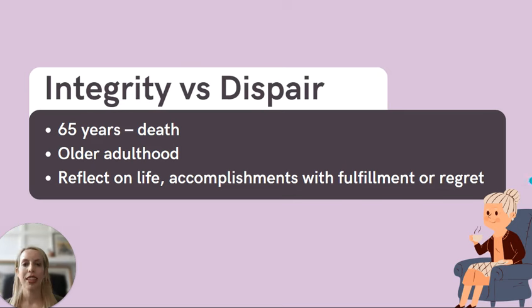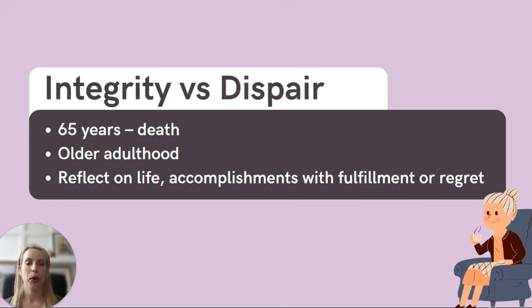And what is our final stage of Erikson's theory? We have the stage of integrity versus despair. This takes place in late adulthood, ages 65 and onward. In this stage, older adults reflect on their lives and their accomplishments.